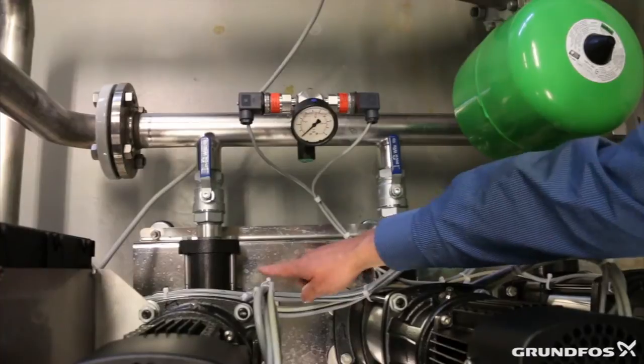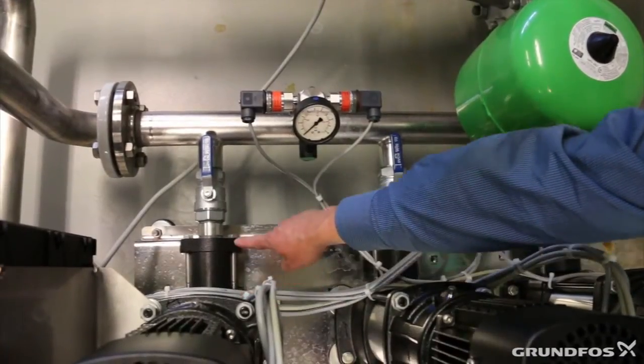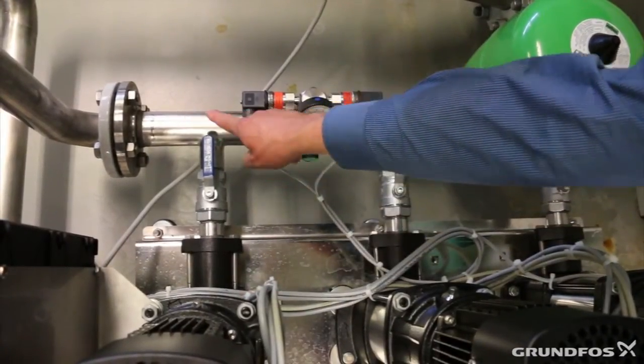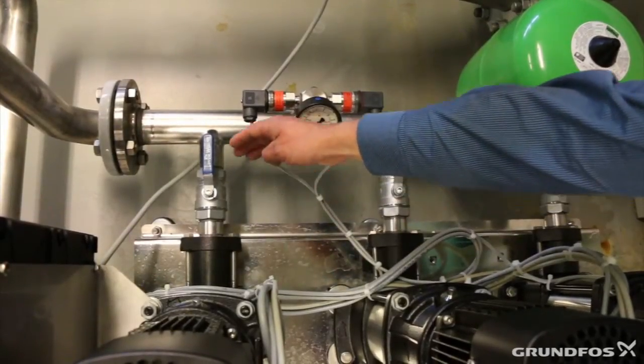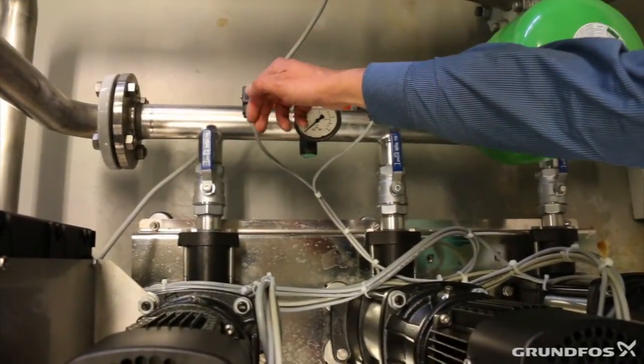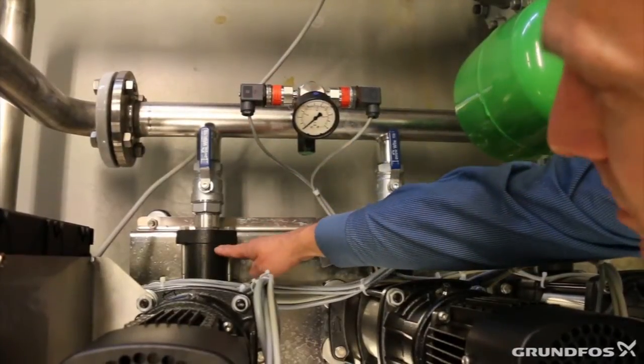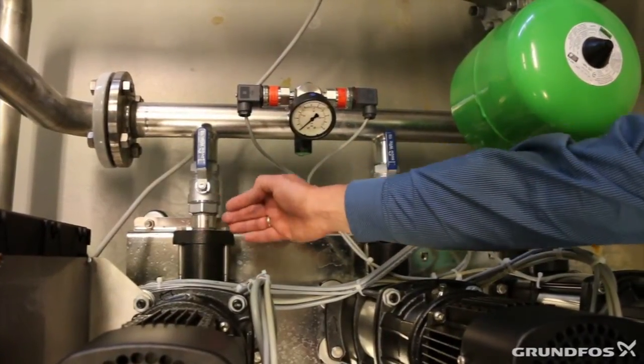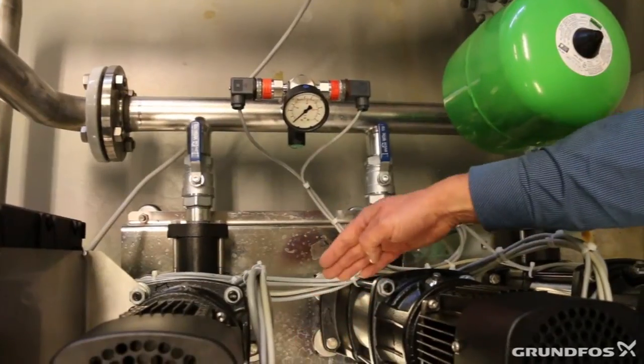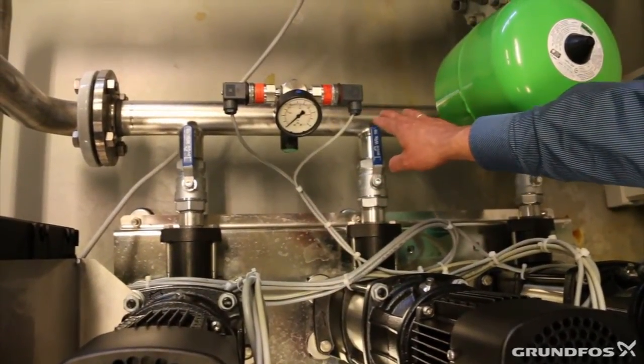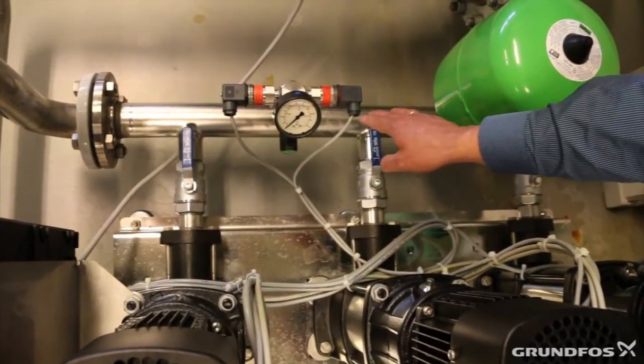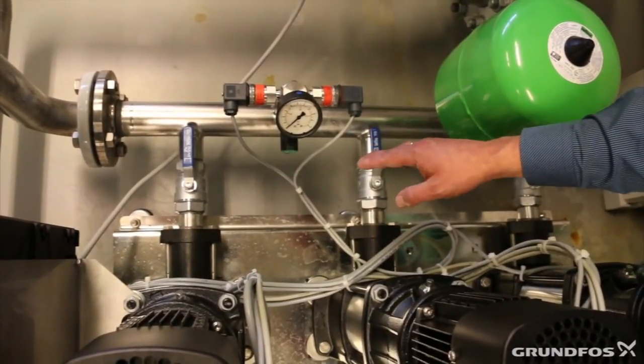How does a non-return valve work? Well, it opens if the water is flowing from the pump to the manifold that we see here in the back. It opens in that direction, but as soon as the water is flowing in the other direction, it will close and prevent the water from going back through the pump into the mains. This also helps us to keep the pressure in the pressurized system up and at the set points that we want to have.